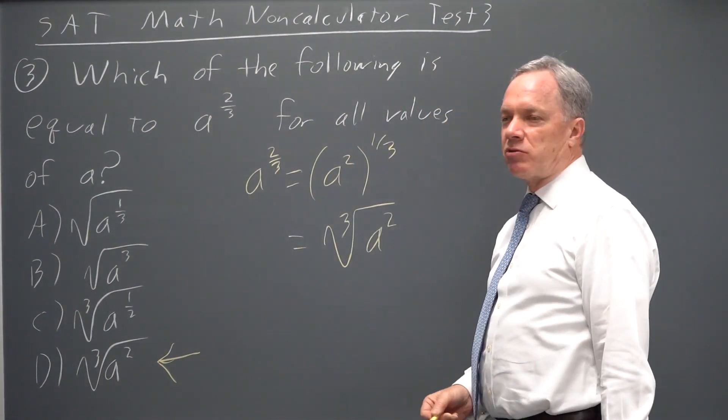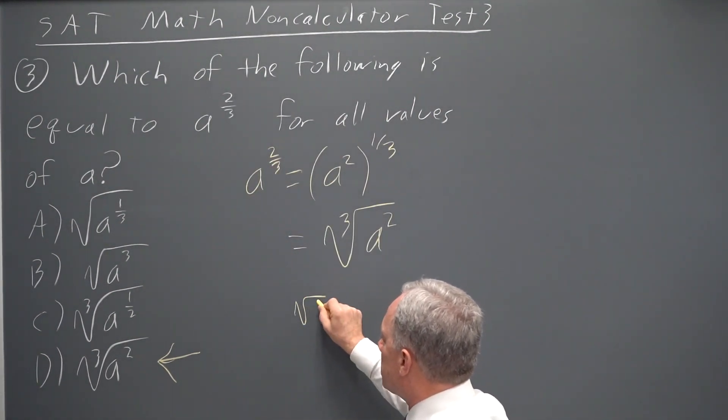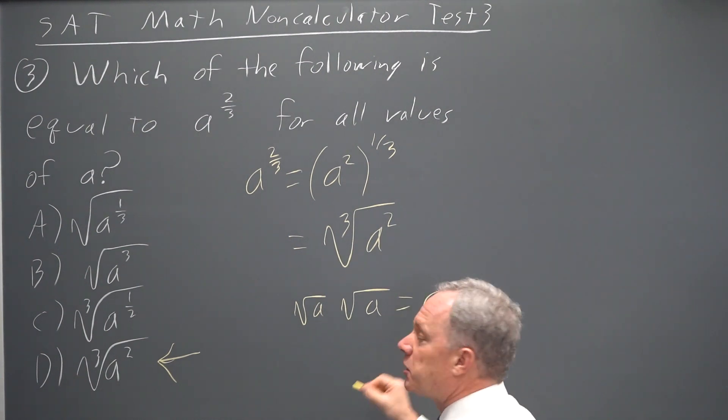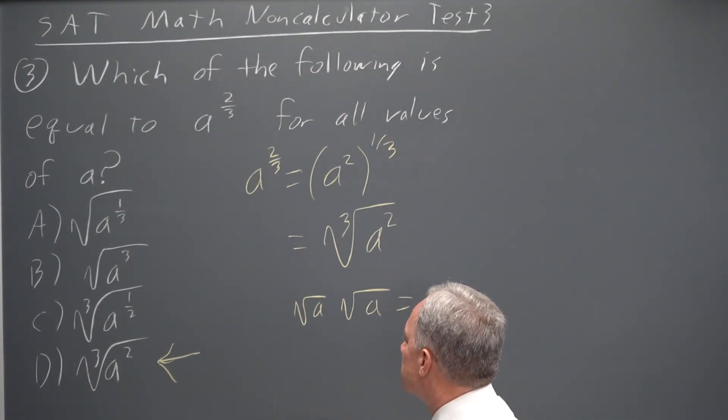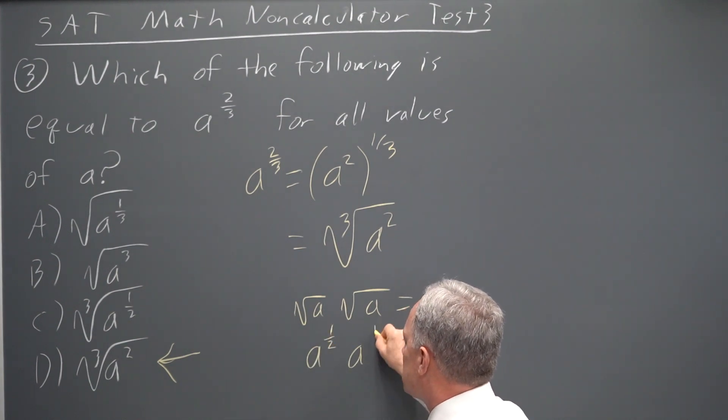If you're trying to remember what rational exponents mean, remember that, for example, root a times root a is by definition a, because a square root times itself is the number you're square rooting, but also a to the one-half times a to the one-half.